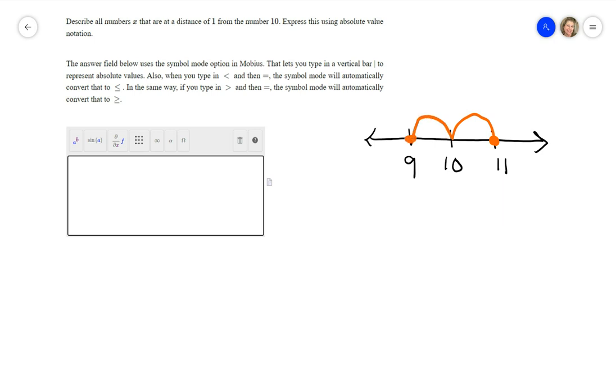Now, they want you to express this using an absolute value notation. Let me explain absolute value real quick. If you said that the absolute value of x equaled just flat out 10, that means there's actually two answers to this.